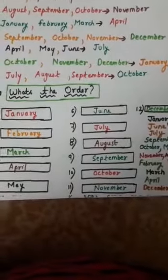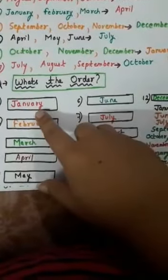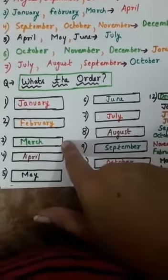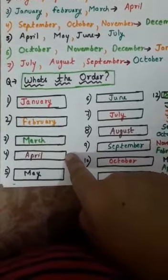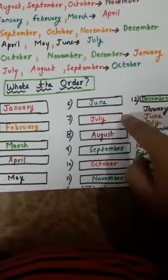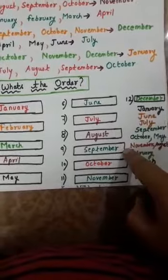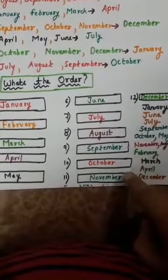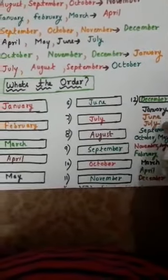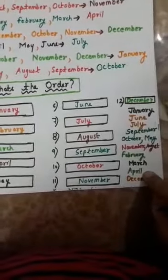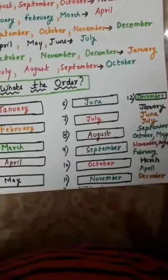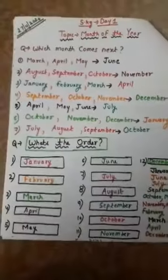The first month is January, second February, after February March, after March April, after April May, then June, July, August, September, October, November, December. The spelling is also shown here — if you don't know the spelling, just see it from here and write it in the blocks. Learn the spelling and the month names, and do the exercise properly.